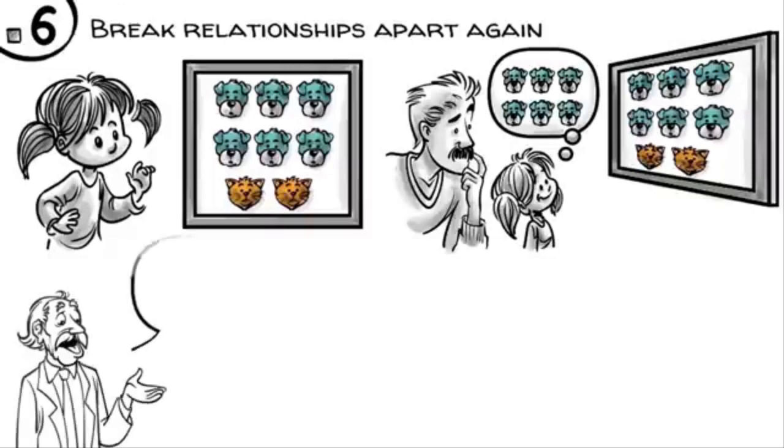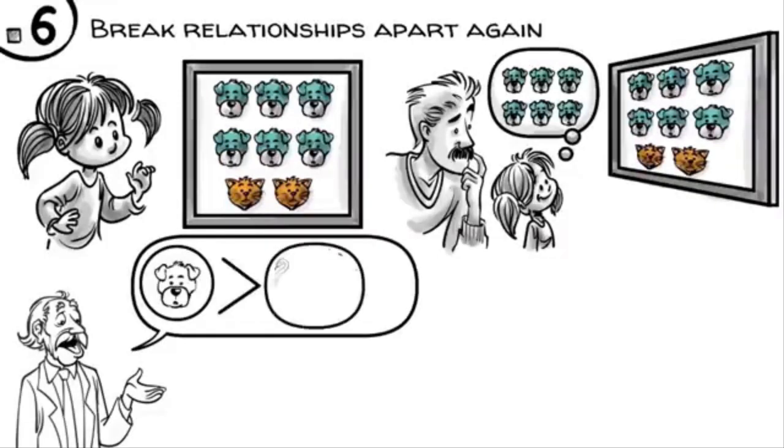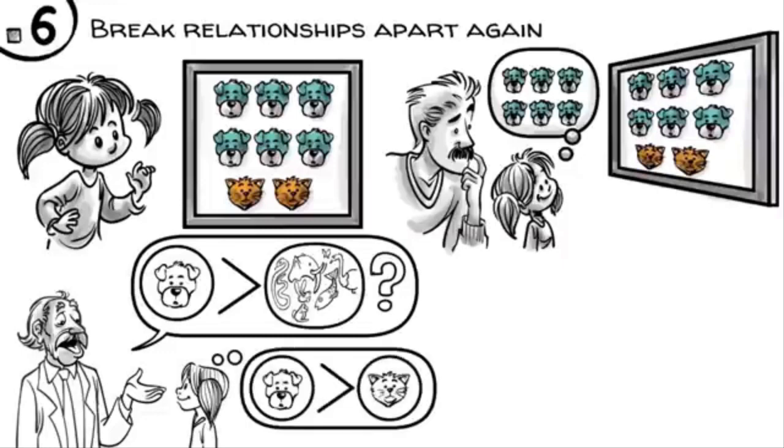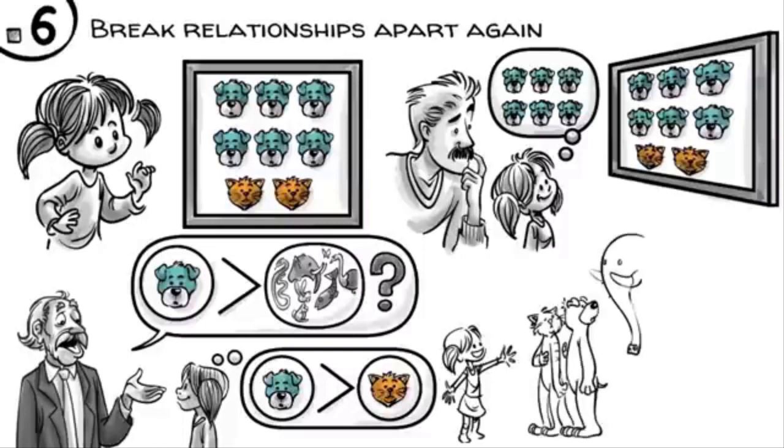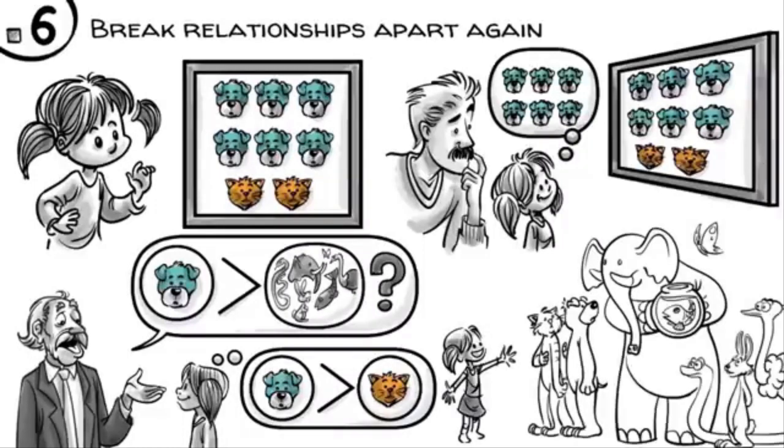In other words, if you ask, are there more dogs or more animals, the child hears, are there more dogs or more cats? At age five, most kids didn't practice enough math to break hierarchical relationships apart while still remembering the whole.